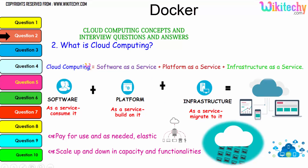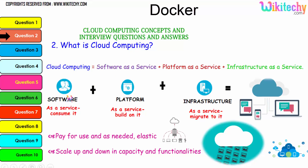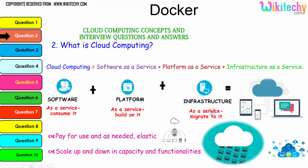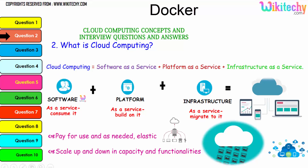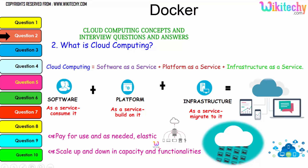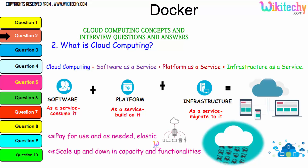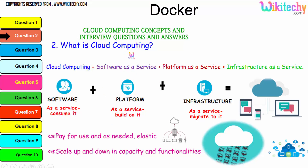Cloud computing consists of Software as a Service, where software is consumed as a service; Platform as a Service, where the platform is considered as a service; and Infrastructure as a Service — the collaboration of software, platform, and infrastructure. The major advantage is pay-for-use as needed. It's elastic — if you need minimal storage, pay for that; if you need bigger storage, pay for that. You can scale capacity and functionality up and down.